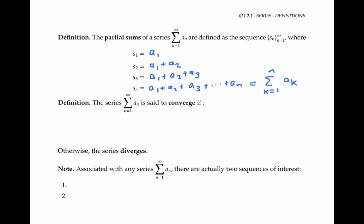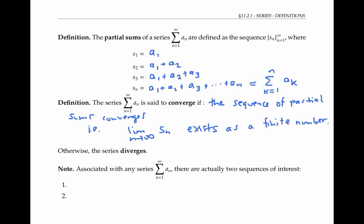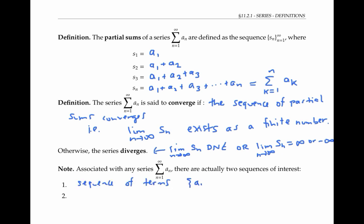The sum of a sub n is said to converge if the sequence of partial sums converges — that is, if the limit as n goes to infinity of S of n exists as a finite number. Otherwise, if the limit does not exist, or the limit is infinity or negative infinity, then the series is said to diverge. It's important to keep in mind that for any series there are two sequences of interest: the sequence of terms (the a sub n's) and the sequence of partial sums (the S sub n's). It's the sequence of partial sums that tells us what the sum of our series is.